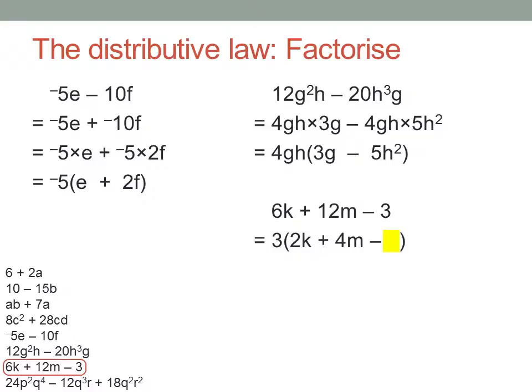3 times 2k plus 4m minus... Hmm, what am I going to put in the last place there? I need it to end up as 3 when I multiply it by the 3 out the front. What times 3 gives me 3? It's 1.